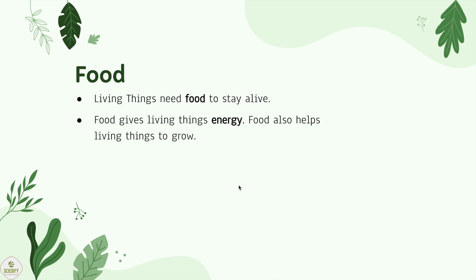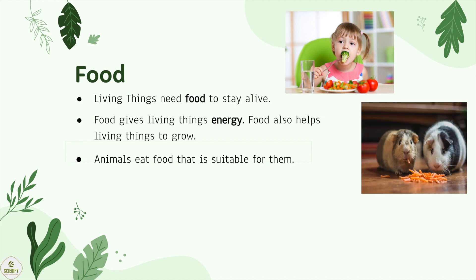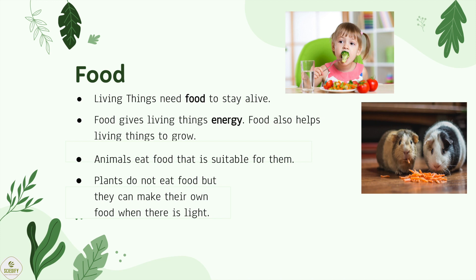Next is food. Living things need food to stay alive. Food gives living things energy. Food also helps living things to grow. Animals eat food that is suitable for them. Plants do not eat food, but they can make their own food when there is light.